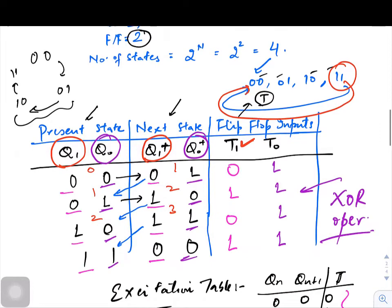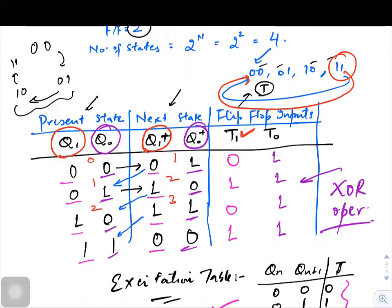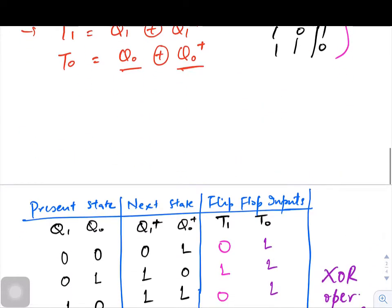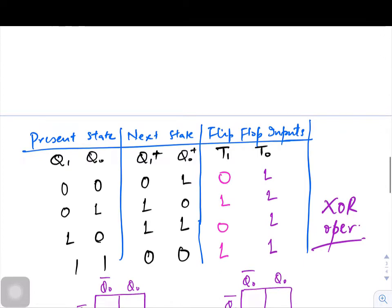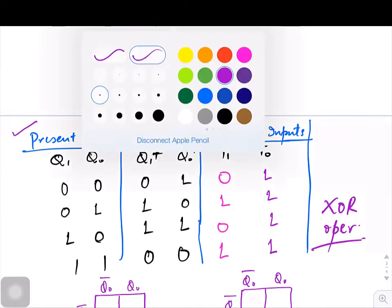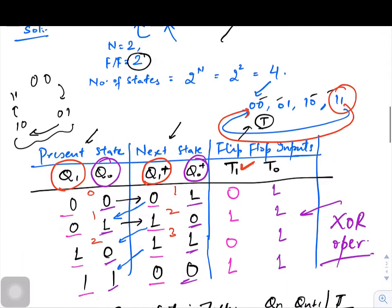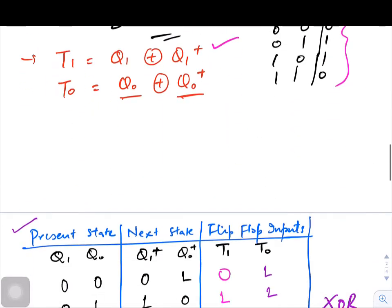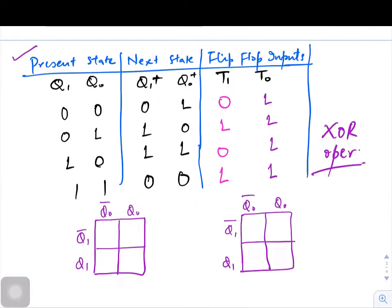We needed to complete this table which included the present state, next state, and the flip-flop inputs. Let us continue from this. Let me again draw this table here, so this table that is being available over here is exactly the same that was derived over here. This is simply a copy of it.